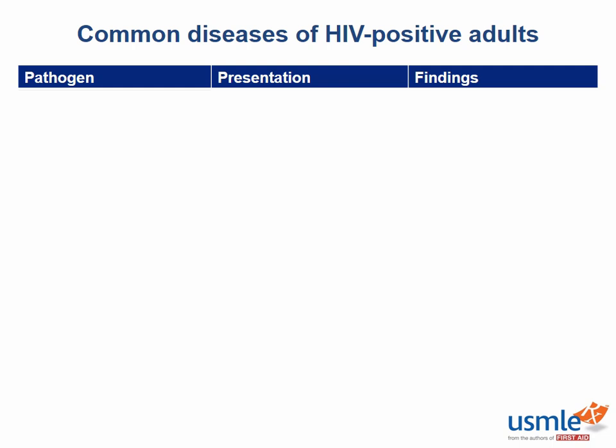And as always, repetition is the key to adult learning. For this video, I will organize the infections based on the CD4 count. As more CD4 cells are killed and the numbers decrease, the greater number of infections are possible.